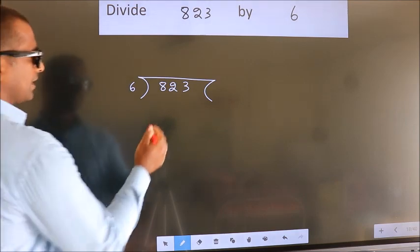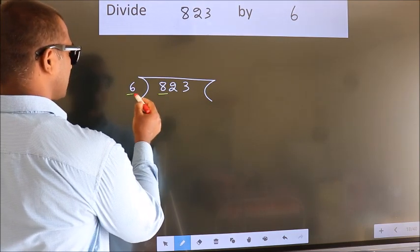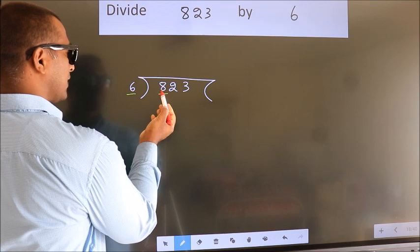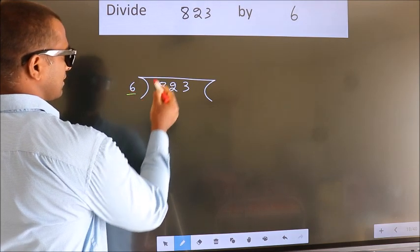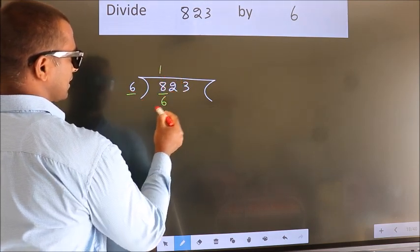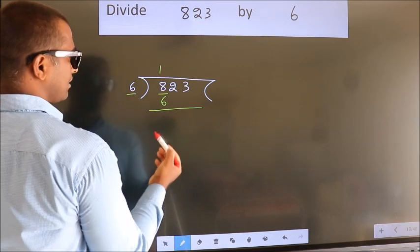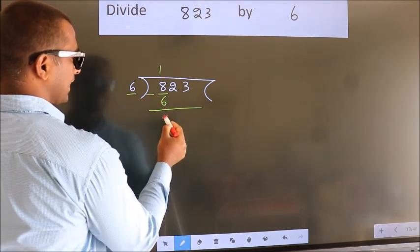here we have 8, here 6. A number close to 8 in 6 table is 6 once 6. Now we should subtract. We get 2.